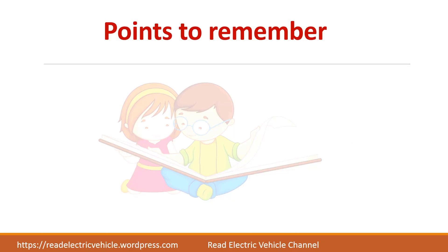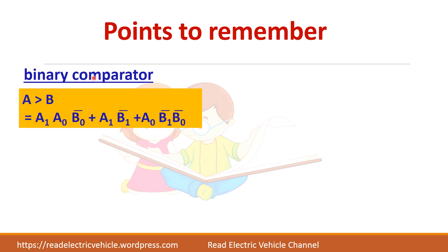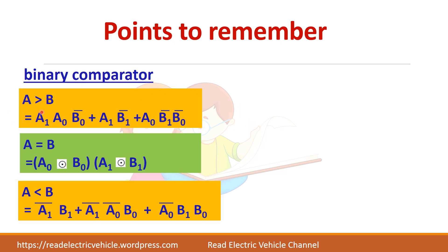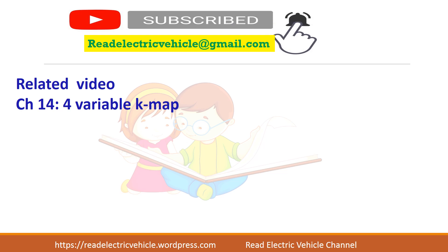So let us summarize the things we have seen. So binary comparator is used to compare two, two bit numbers. So these are the equations we have derived it. If you want to know about K map, four variable K map, you can refer to this video. The link is given in the description.